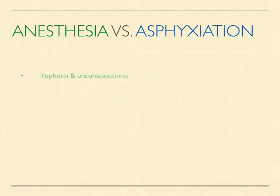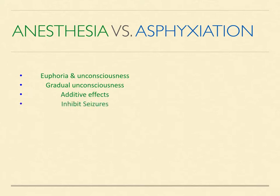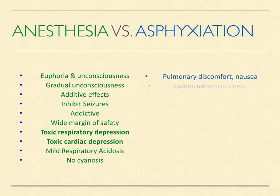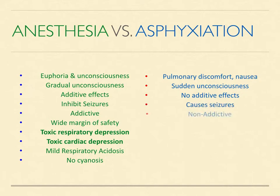Both anesthesia and asphyxiation can produce sustained, reversible loss of consciousness. However, there are obvious differences. Genuine anesthetic inhalation agents produce progressive dose-dependent euphoria and loss of consciousness. They produce additive effects when combined with other hypnotic agents. They inhibit seizure activity, are addictive, and they have a wide margin of safety, even though they cause dose-dependent toxic depression of cardiac and respiratory function. They cause only mild respiratory acidosis, and they do not cause cyanosis.